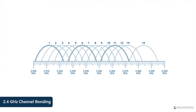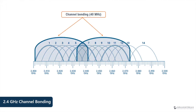GWN access points support channel bonding, a feature that combines two or more channels to increase throughput — like increasing the size of a pipe or combining two lanes. So instead of using the default channel width of 20 megahertz, GWN access points offer the option to use wider channels of 40 megahertz. However, there is a downside to using 40 megahertz channels on the 2.4 band because it does not have enough space to create two non-overlapping 40 megahertz channels, especially in North America, which can result in adjacent channel interference when using more than one access point.